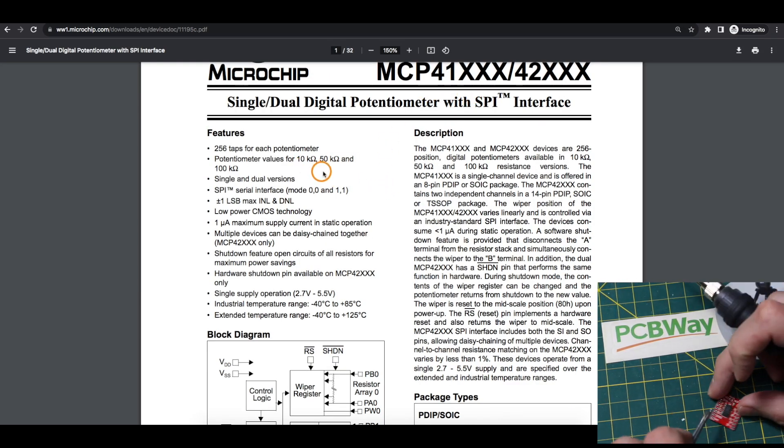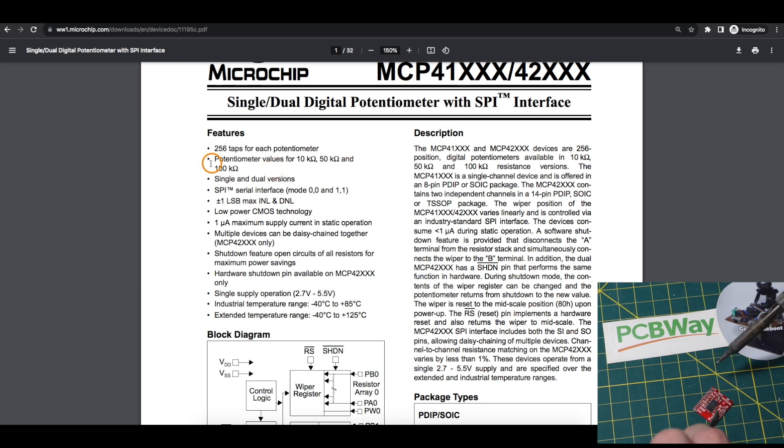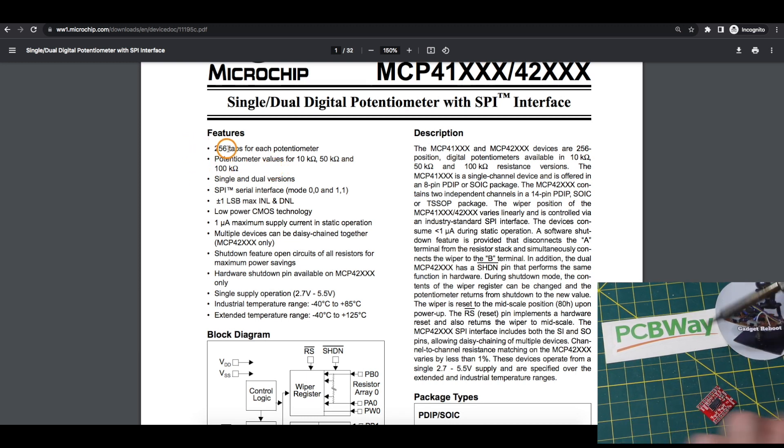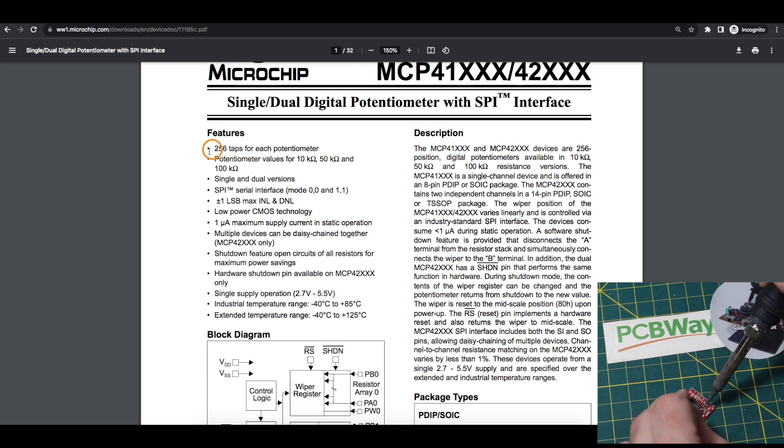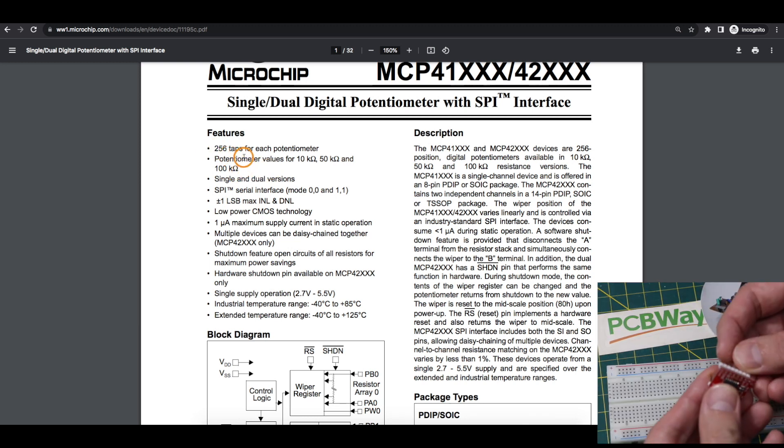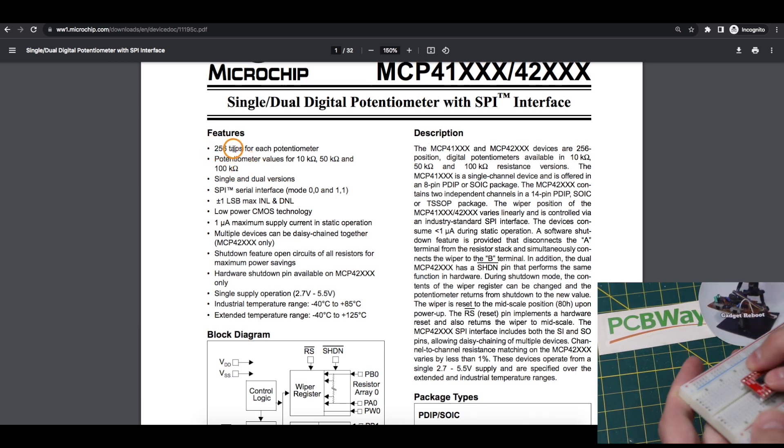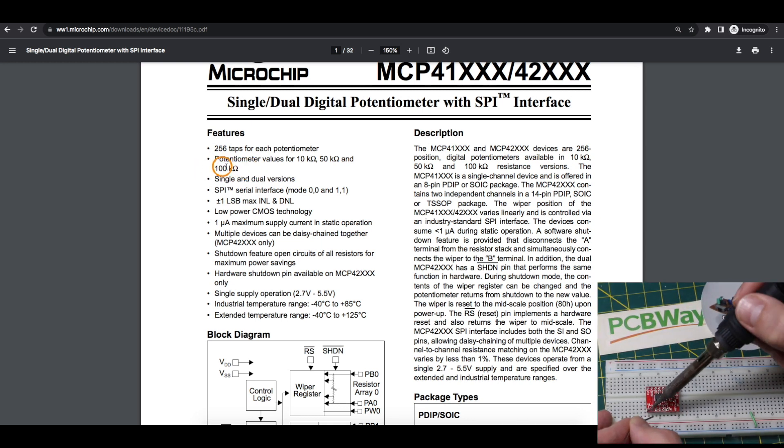This part series comes in 10, 50, and 100k variants. So I have the 100k. And you get 256 wiper tap positions that you can set. So over the SPI bus, if you configure the wiper position with a value of 128, it would be halfway between 0 and 100k on the wiper.